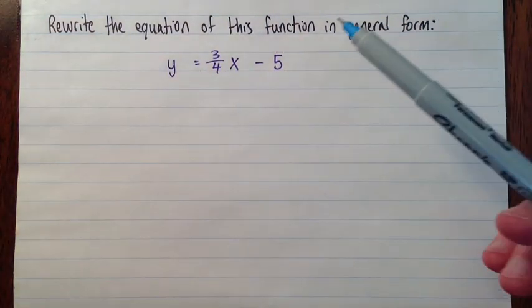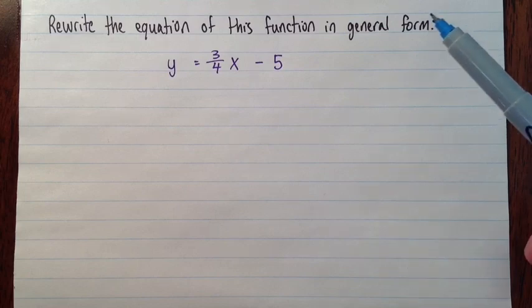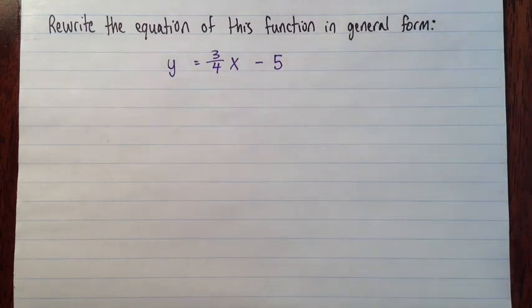So we essentially need to get everything over onto one side of the equation, and we need to make sure we get rid of all the fractions, and then we need to make sure that a term is positive, and a is the coefficient on x. It's sort of easiest to get rid of the fractions first.